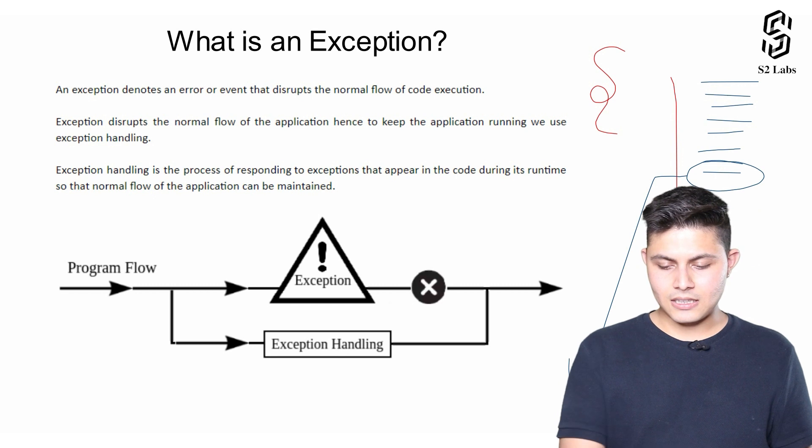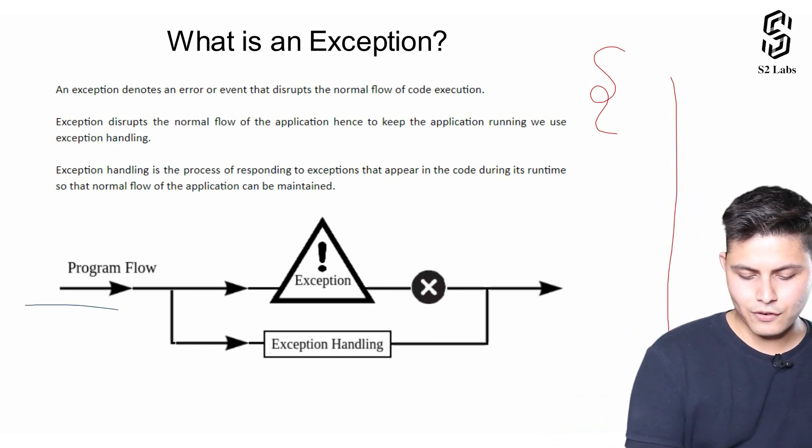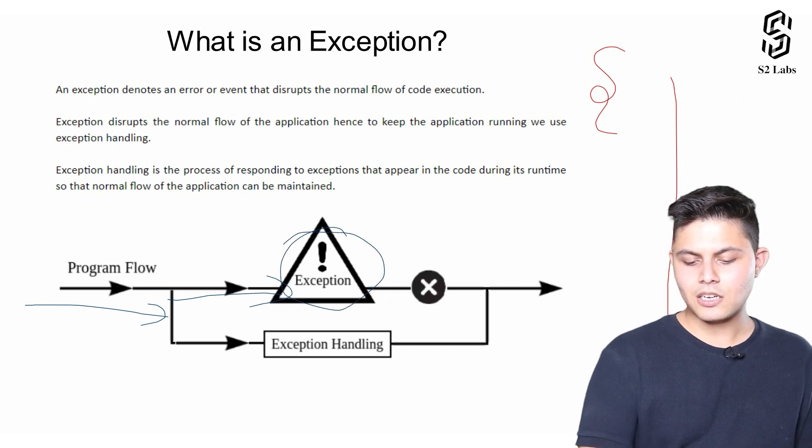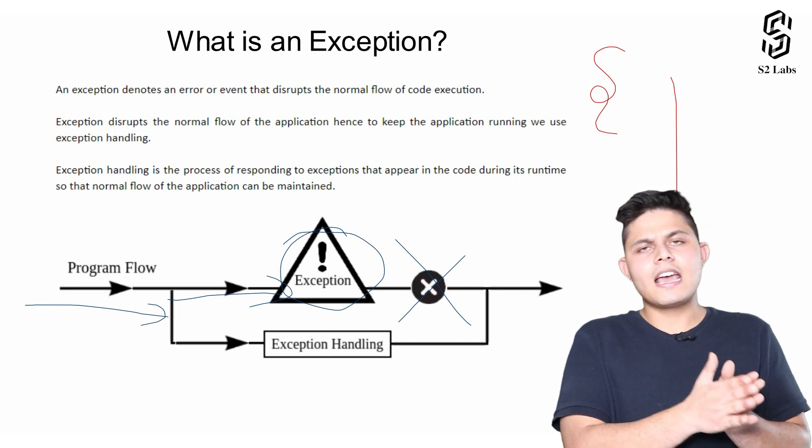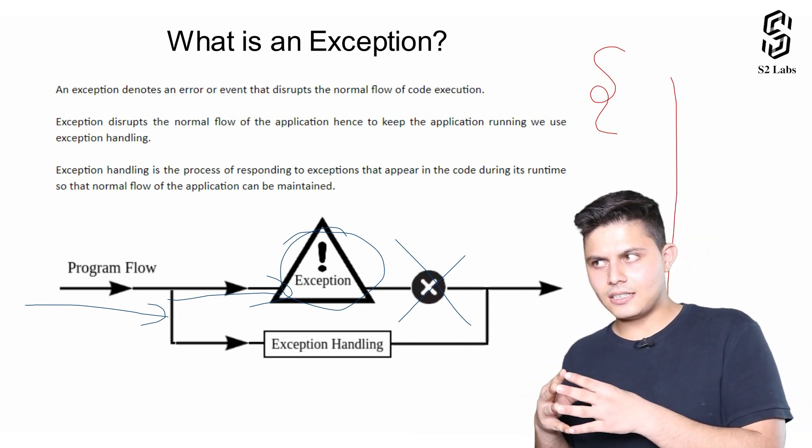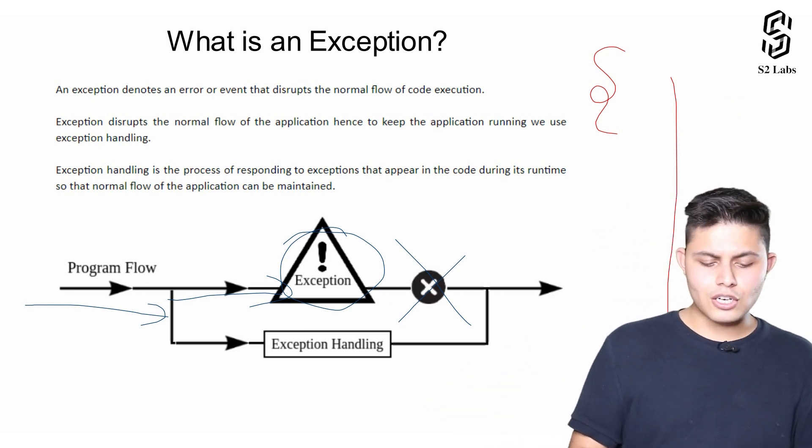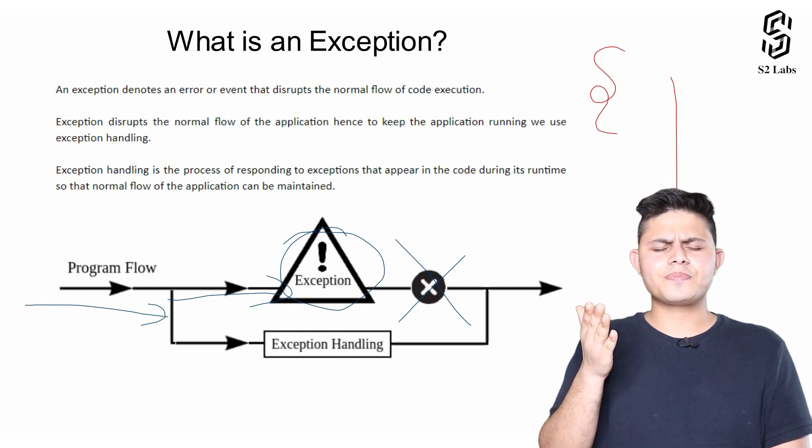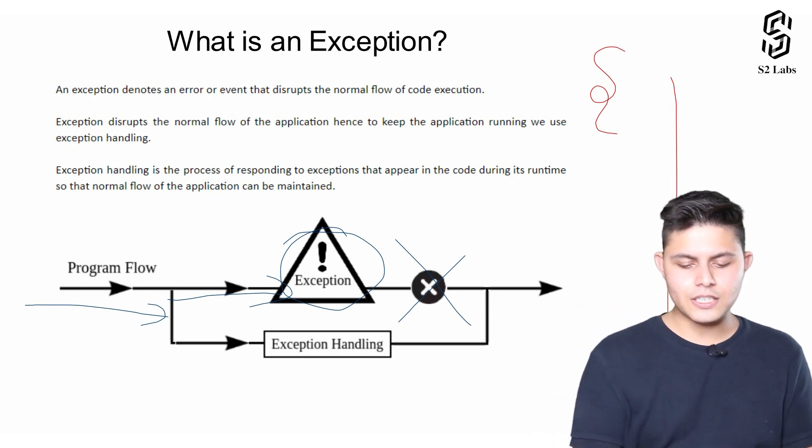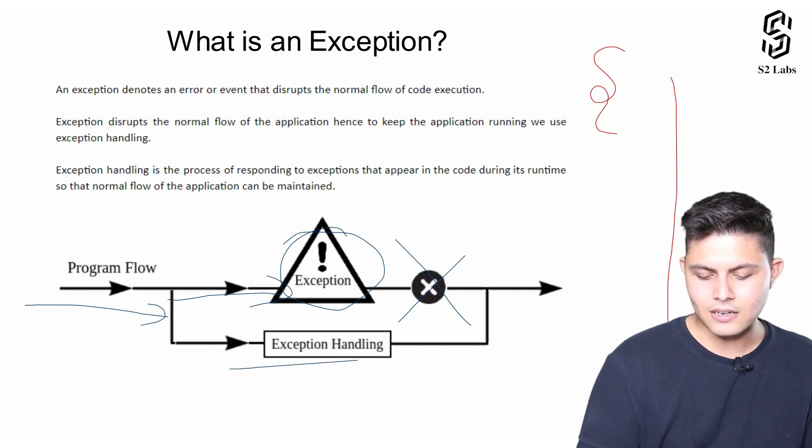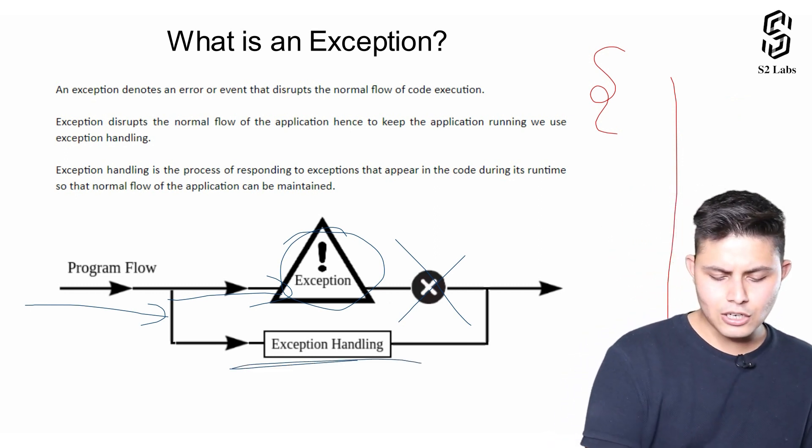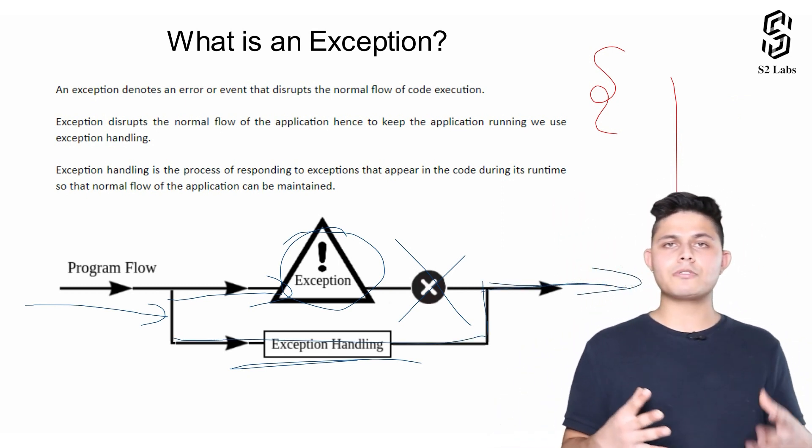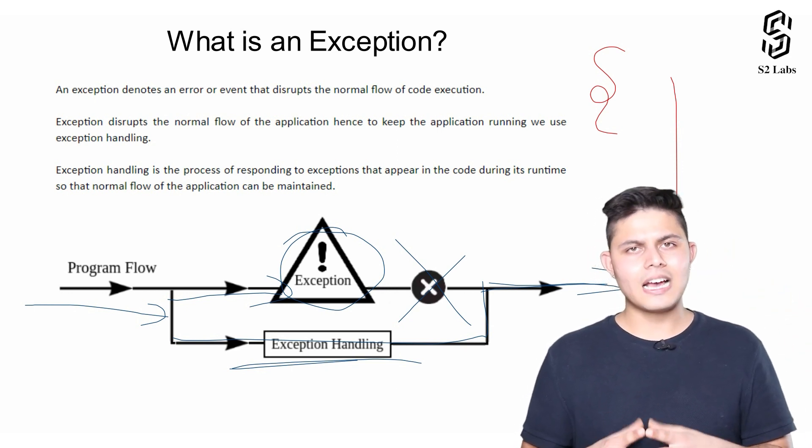In this diagram, there's a program flow going on and in between, an exception occurs. Because of this exception, the complete execution flow gets halted and stops executing the rest of the code. To handle this, we make sure we're handling the exceptions well so that the code written after this keeps on executing irrespective of the exception which occurred earlier.